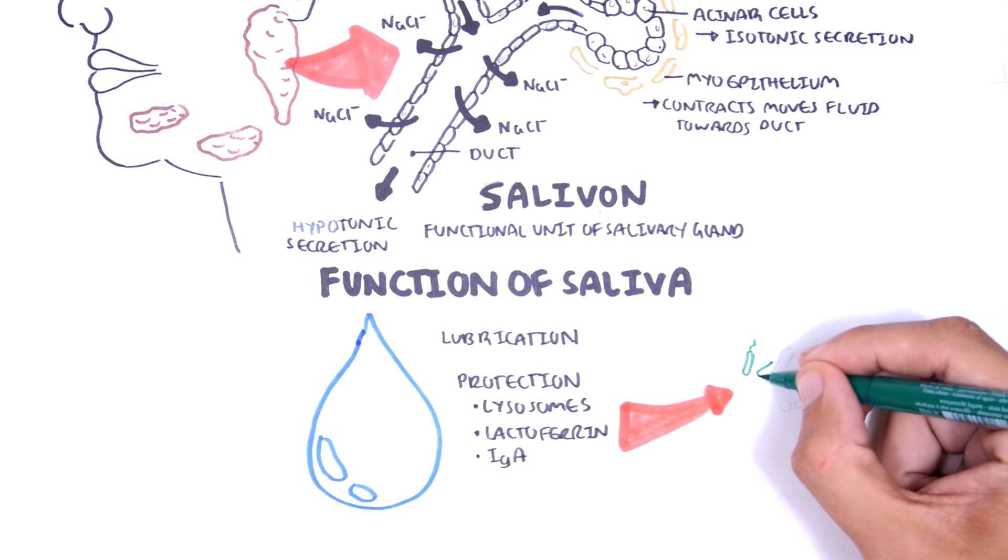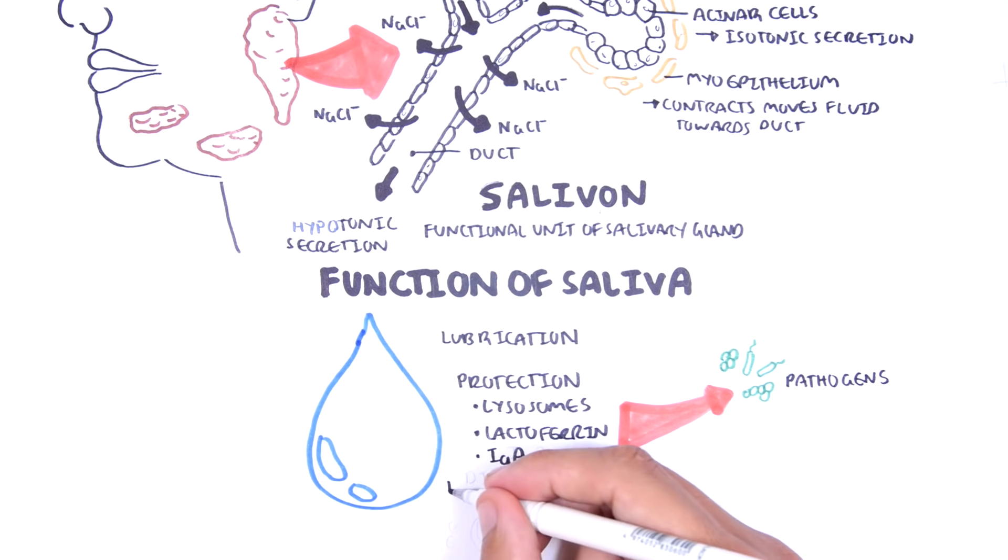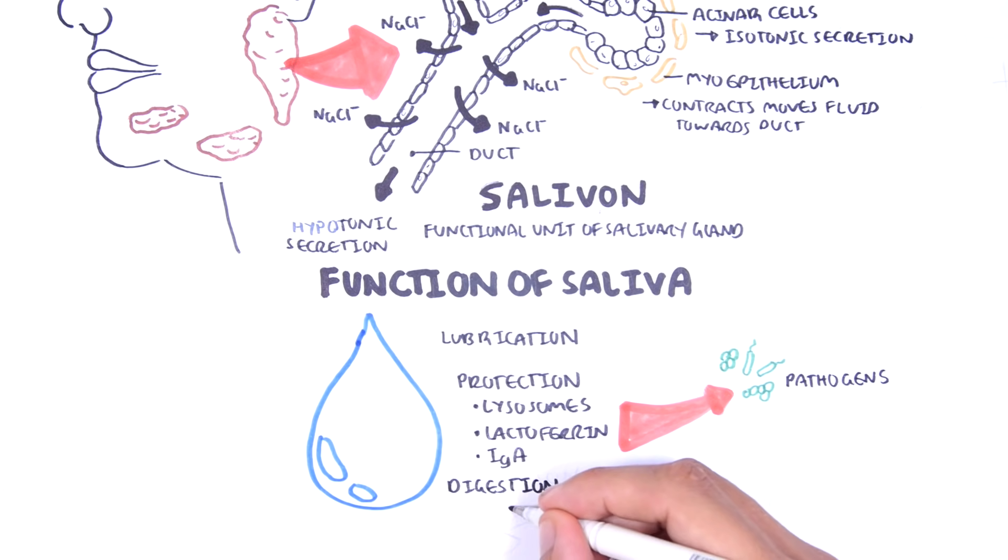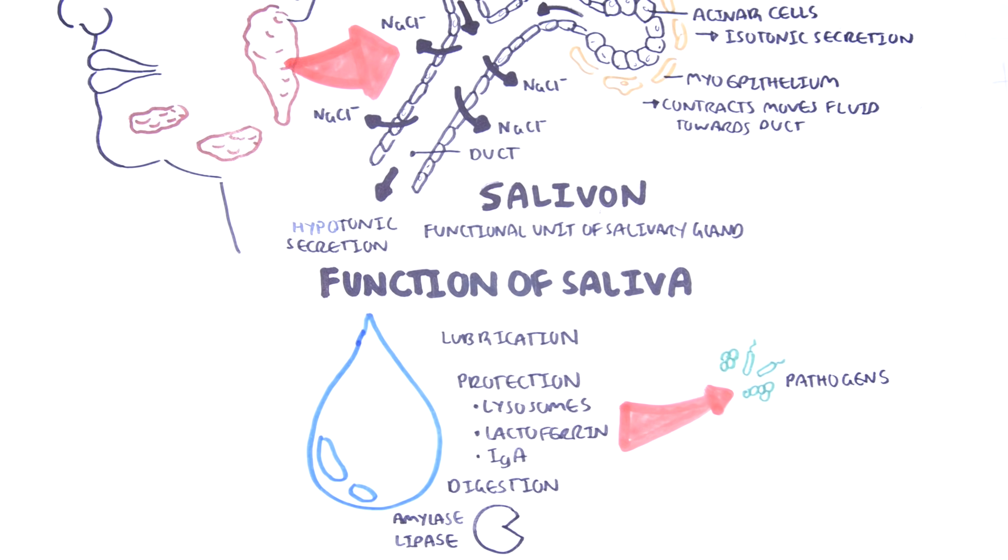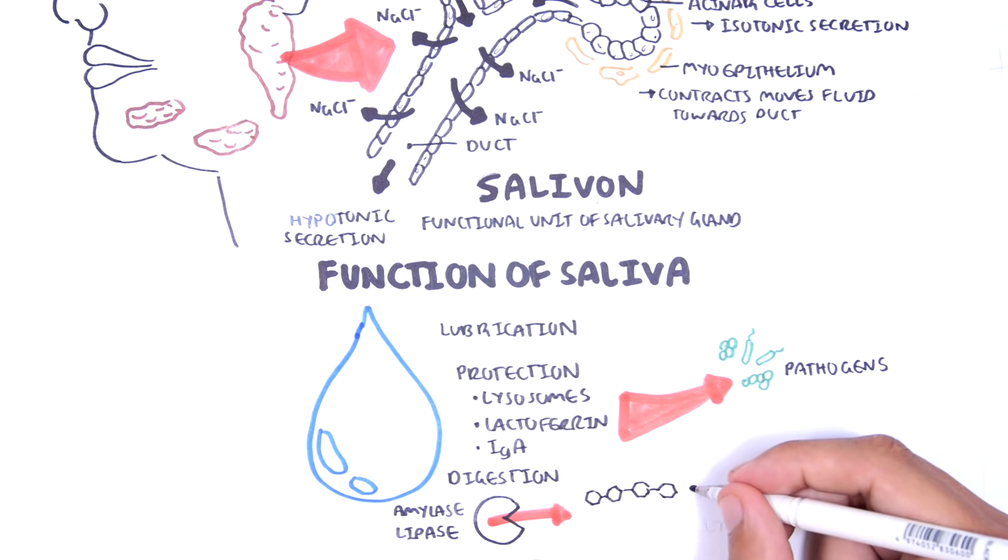Lactoferrin chelates iron, and iron is normally needed by many bacteria for replication. It can also contain IgA, which is an immunoglobulin and helps in the immune response. The final function is digestion because saliva contains amylase and lingual lipase which helps break down carbohydrates and fats respectively.